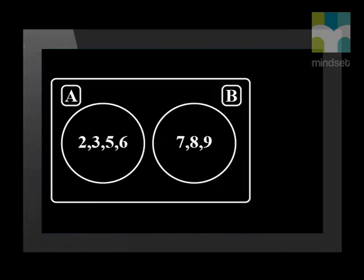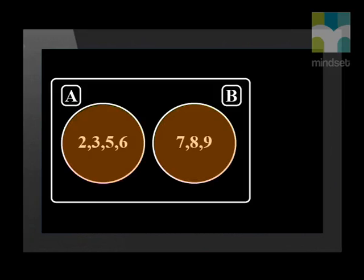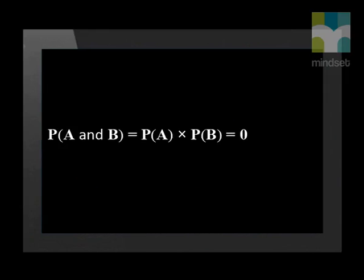Mutually exclusive events do not have an intersection. For example, in the following Venn diagram, subsets A and B do not share any of the same numbers — both subsets have unique numbers inside. Thus the probability of event A and B, in other words the intersection of the two subsets, will be zero. But to get the probability of event A or B — the union of the two subsets — that can be calculated by adding the separate probabilities of A and of B. This formula only applies to mutually exclusive events.